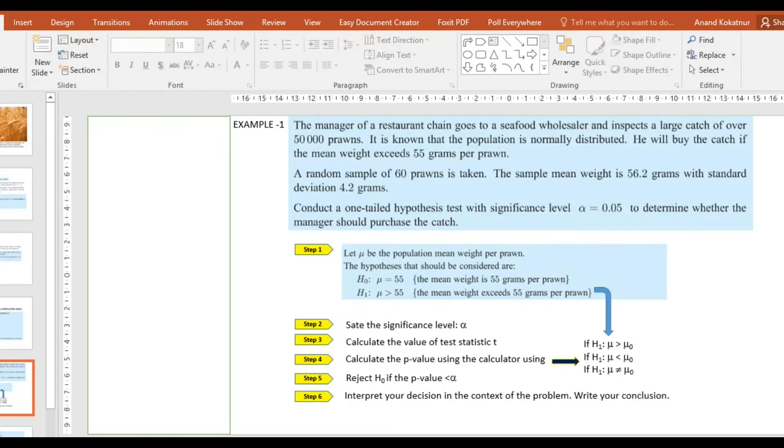The question is to determine whether the manager should purchase the catch or not. Step 1: Let μ be the population mean weight per prawn. Now we are going to frame our hypothesis. The hypothesis should include the values stated in the scenario. So our null hypothesis H₀: μ = 55. And the alternative hypothesis, since he's going to buy the catch if it exceeds 55, is H₁: μ > 55. Step 2 was to decide on the significance level. We have significance level as 0.05, so we will use that.